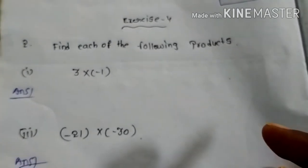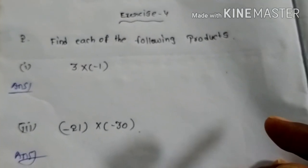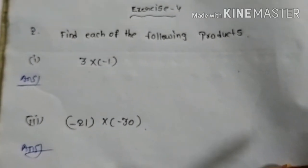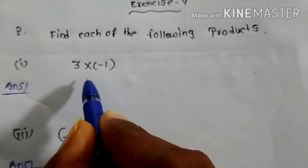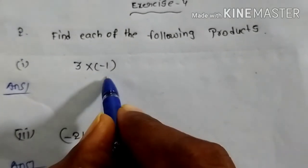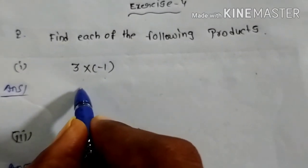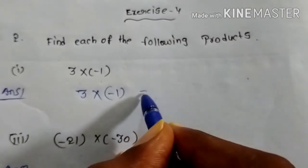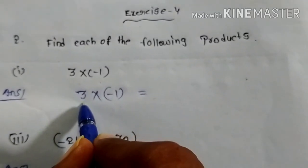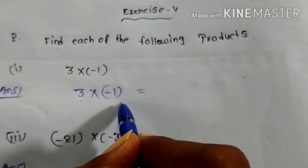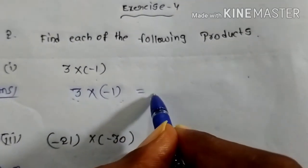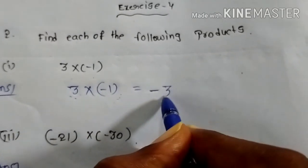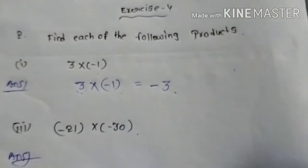Now you can see Exercise 4, second bit — find each of the following products. Here: 3 into minus 1. This is a positive integer and this is a negative integer. Plus into minus gives minus. 3 times 1 is 3. Your answer is minus 3.